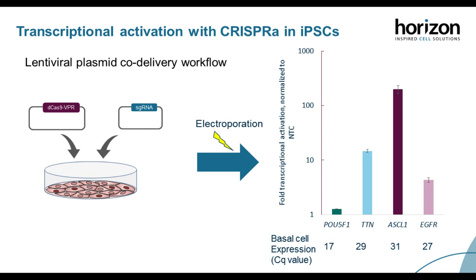For CRISPR-A in iPS cells, we electroporated plasmid for dCas9-VPR and a lentiviral sgRNA targeting POU5F1, ASCL1, TTN, or EGFR, and detected activation with RT-qPCR at 72 hours post-nucleofection. Because these are iPS cells, the basal expression of POU5F1 is already high, with a Cq value of 17, so we don't see significant further activation—confirming that high basal expression limits fold activation. We do see good activation of the other three genes, with ASCL1 having the highest level of activation.